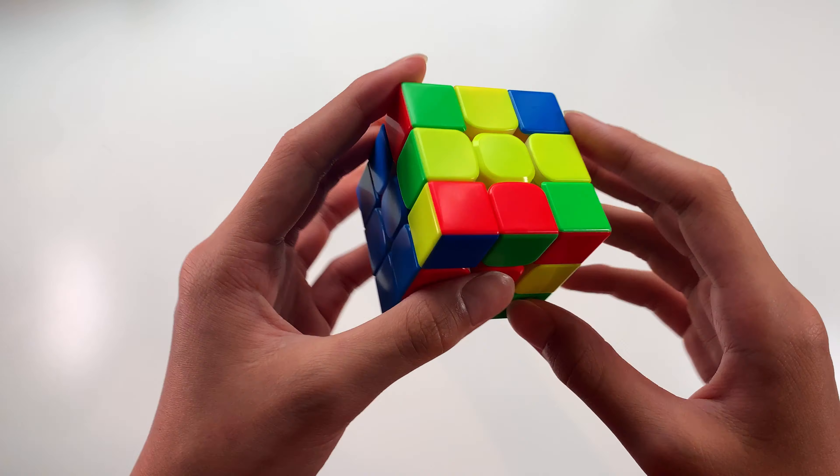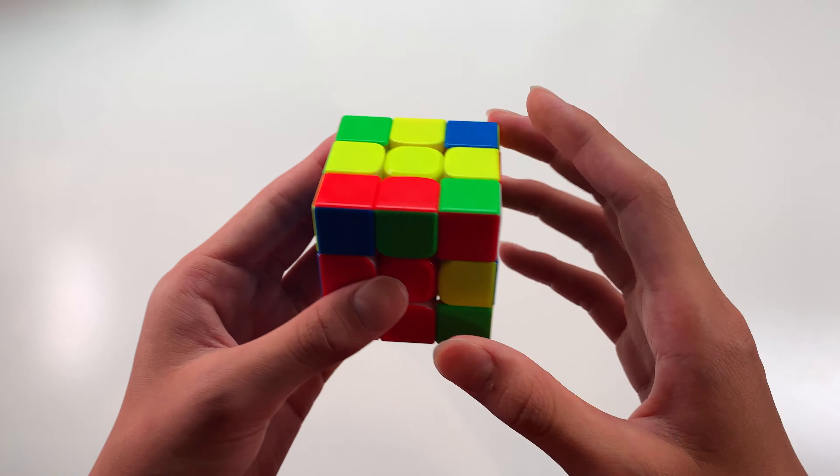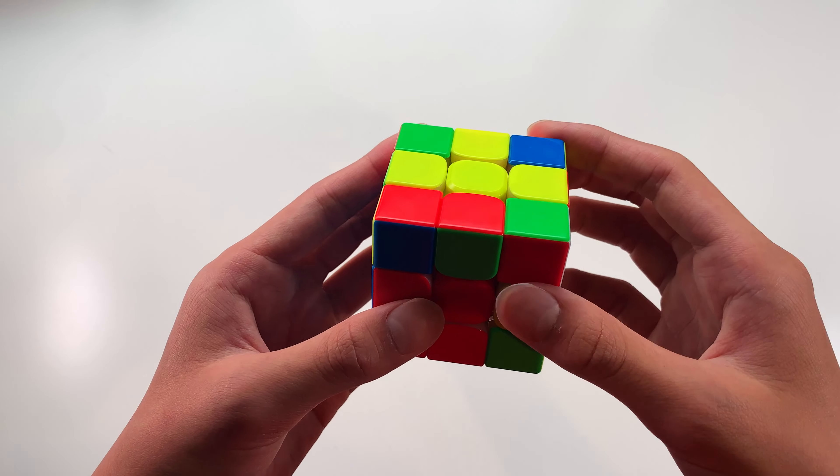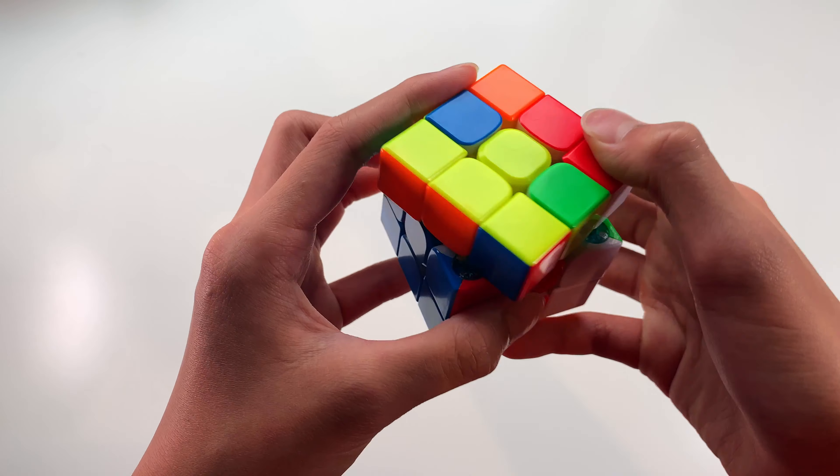Finally, we have this case. This is when all of the other F2L pairs are solved, and you have a flipped edge case. There are three ways of doing it. The first is a slightly more inefficient way, which is rotating, pairing it up, and rotating back to insert.